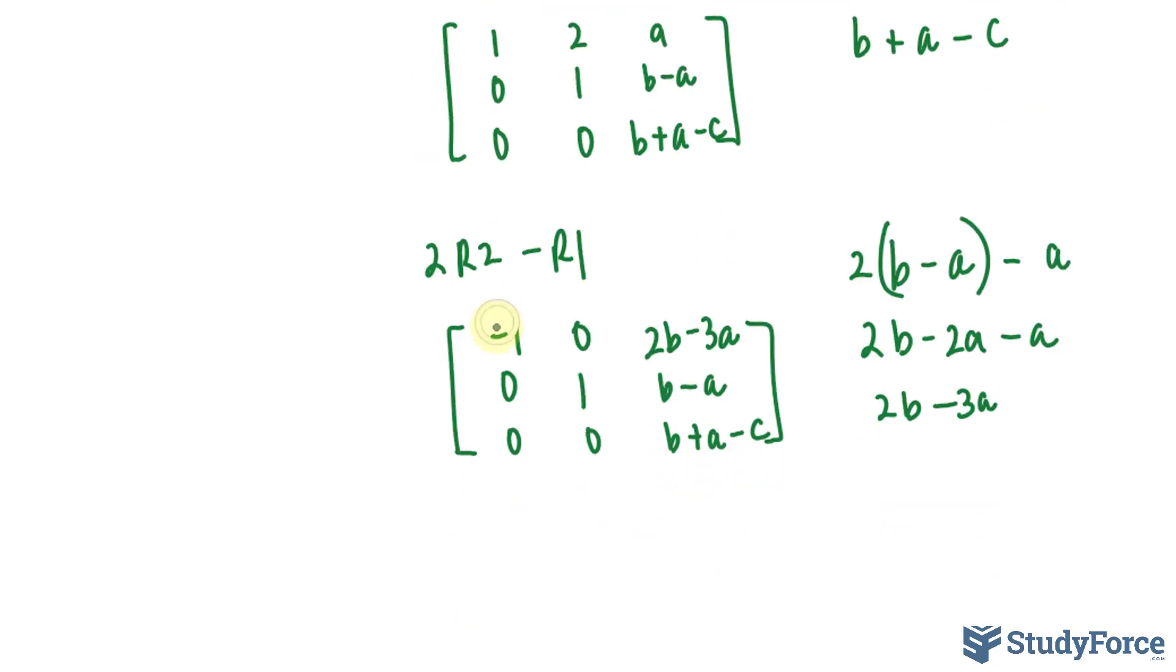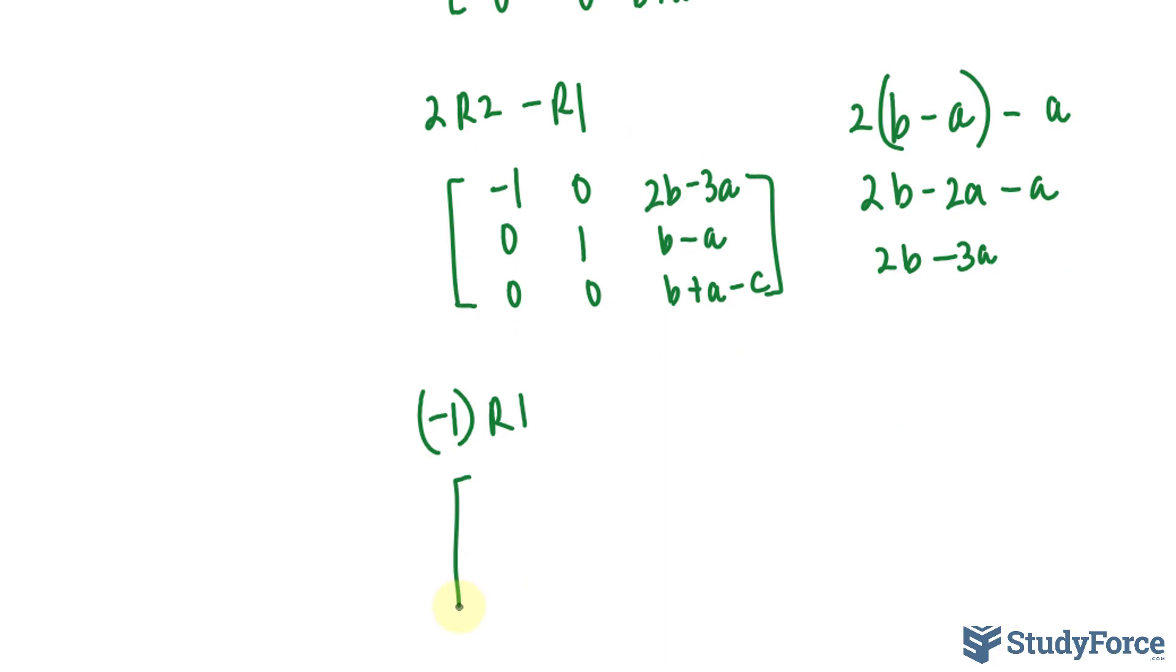And as you can see, this is -1. So we'll multiply row 1 by -1. And that should give us what we're looking for. 1, 0, 3A minus 2B. And the rest are unchanged.